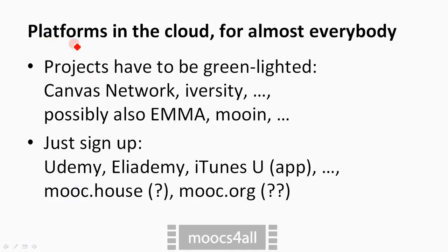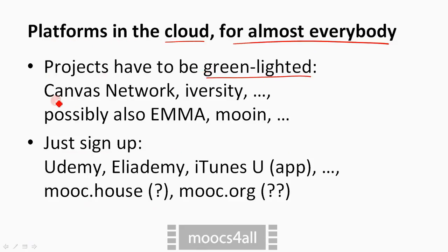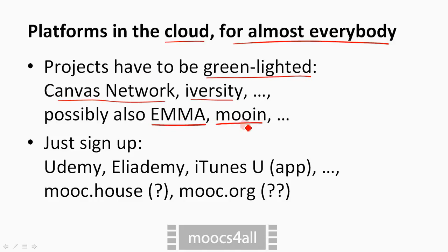The most interesting platforms for lean production are of course those that live in the cloud and are open for almost every author at little or no cost. Some of those platforms work on a project basis and wish to review or at least green light your project. Among them: Canvas Network in the US,Iversity in Berlin, a European project called EMA (the European Multiple MOOC Aggregator), and the Moine platform from Lübeck, Germany.